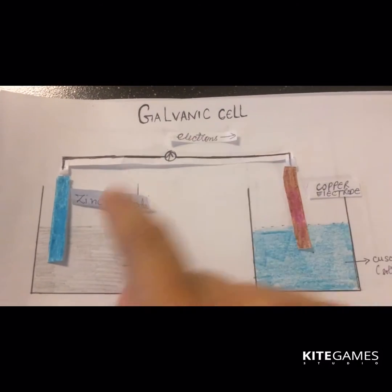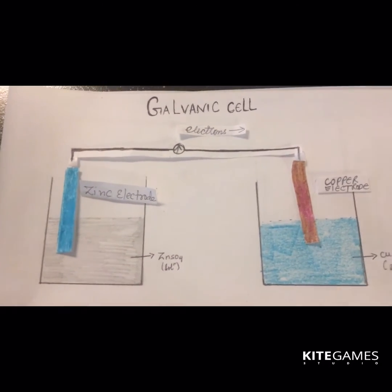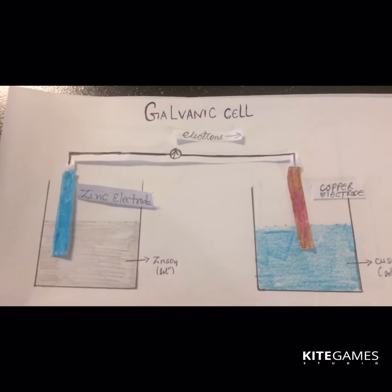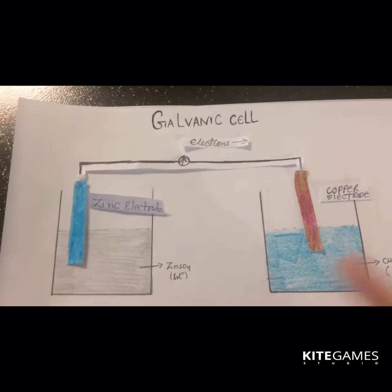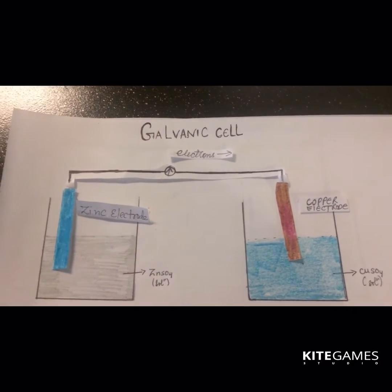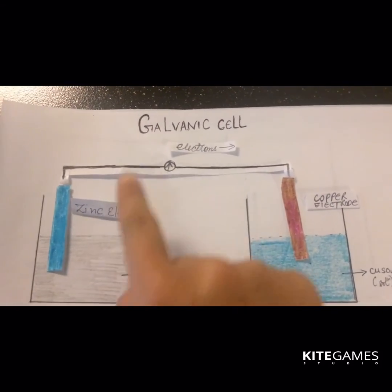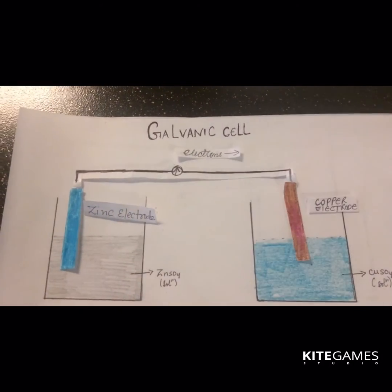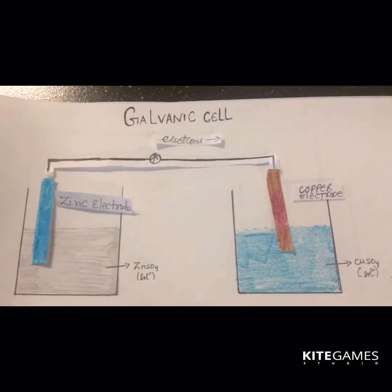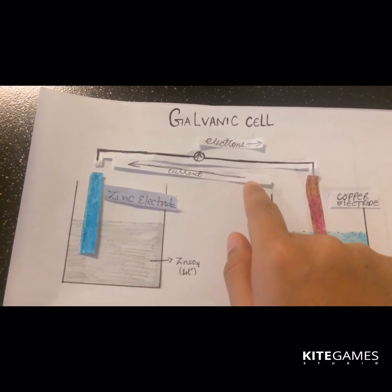You must be wondering why electrons flow from zinc to copper and not vice versa. In the case of zinc and copper, zinc is more reactive than copper. The metal which is more reactive will lose electrons very fast. Zinc loses electrons while copper, being less reactive, attracts electrons. Whenever there is a flow of electrons, it results in the formation of electricity. The current then flows from copper to zinc.